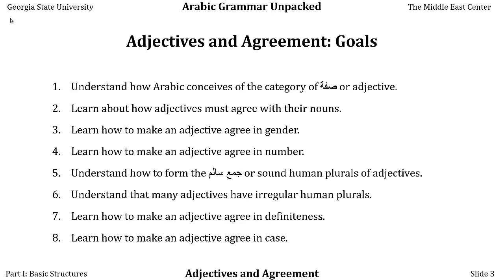Our goals here are to understand how Arabic conceives of the category of siffa, or adjective; to learn how adjectives must agree with their nouns in gender and number; to understand how to form the jama' salim, or sound human plurals of adjectives; to understand that many adjectives have irregular human plurals; and to learn how to make an adjective agree in definiteness and case.